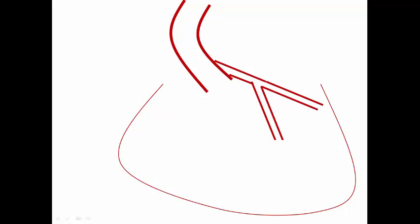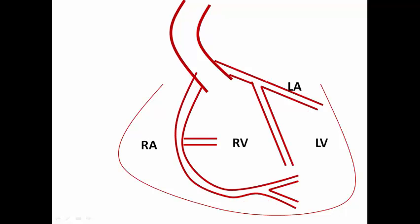Looking at this diagram, we can see the aorta, the left main bifurcating into LAD and LCX, and the RCA which gives the RV branch nearly at the mid segment to supply the RV. The problem occurs when a thrombus occludes the RCA before the RV branch, resulting in insufficient blood supply to the right ventricle and RV infarction. RV infarction occurs if the RCA is occluded proximal to the RV branch, whereas if the occlusion is distal to the RV branch origin, RV infarction usually does not occur.